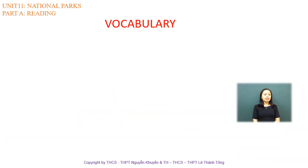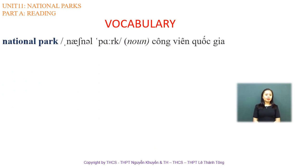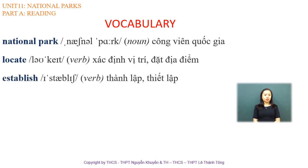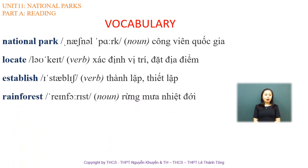Now, to help you understand the reading passage, let's move to vocabulary. 'National Park' — the stress is on the word 'Park,' not 'National.' 'Locate' — the stress is on the second syllable. 'Established' is a verb, stress on the second syllable. 'Rainforest' — the stress is on the first syllable. When you say 'forest,' the stress is on 'for,' but when you say 'rainforest,' it is on 'rain.'